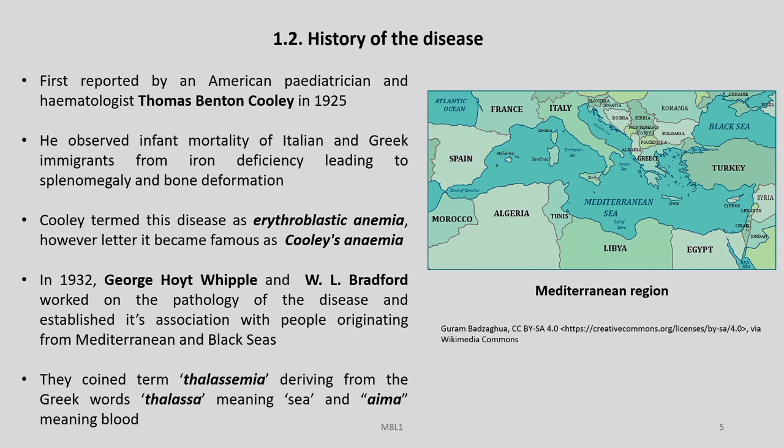If you look into the history of this disease, it was first reported by American pediatrician Thomas Benton Cooley in 1925. He observed infant mortality of Italian and Greek immigrants from iron deficiency leading to splenomegaly and bone deformation. Cooley termed this disease as erythroblastic anemia, however later it became famous as Cooley's anemia. In 1932, George Howard Whipple and Bradford worked on the pathology of the disease and established its association with people originating from the Mediterranean and Black Sea.